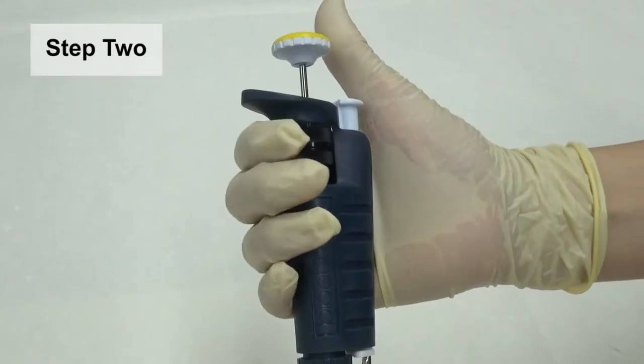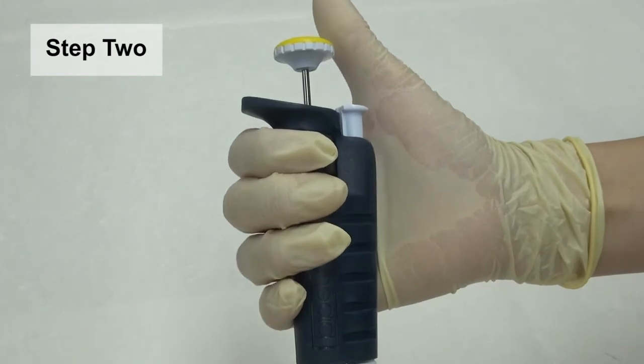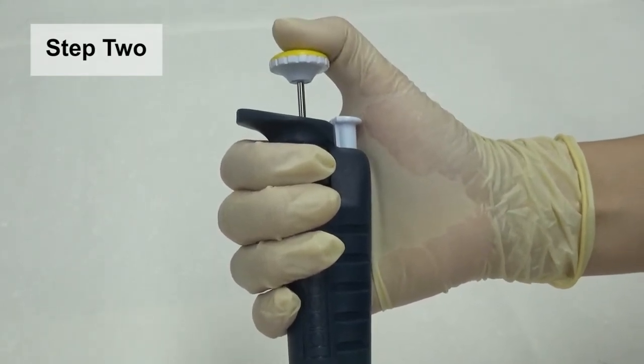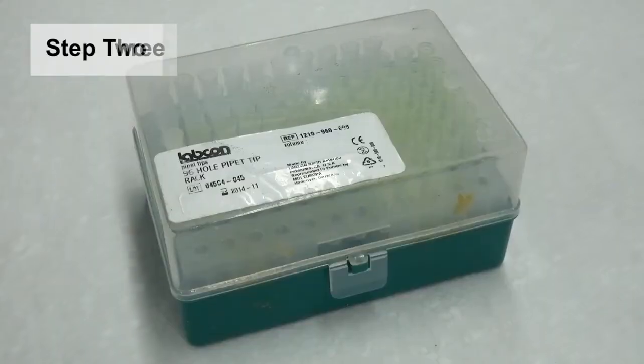Step 2. Please hold the MicroPipet with four fingers. Free the thumb to operate the operating button for aspirating and dispensing the solution.